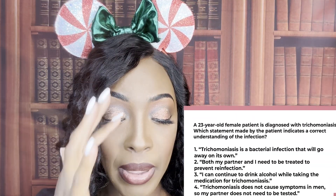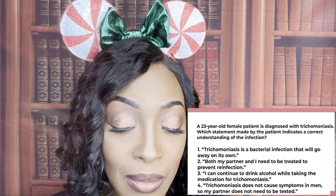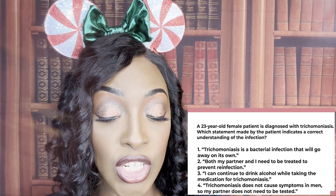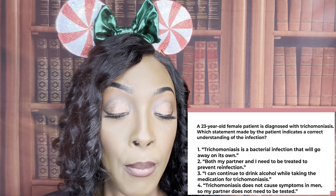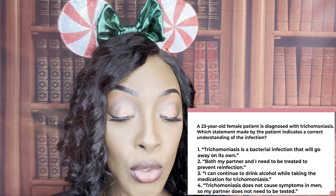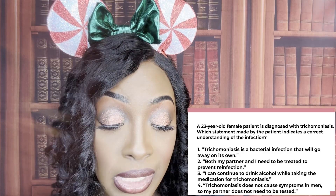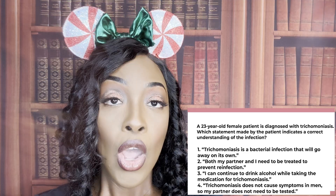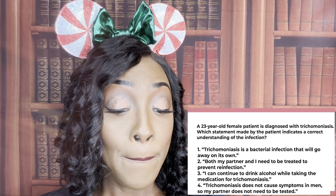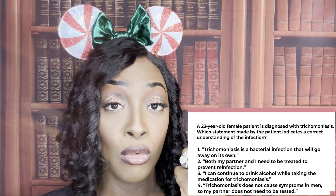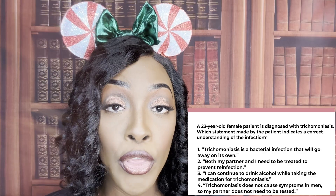A 23-year-old female patient is diagnosed with trichomoniasis. Which statement made by the patient indicates a correct understanding of the infection? One: trich is a bacterial infection that will go away on its own. Two: both my partner and I need to be treated to prevent reinfection. Three: I can continue to drink alcohol while taking this medication for trich. Or four: trich does not cause symptoms in men, so my partner does not need to be tested. The only answer showing correct understanding is two. All three STIs — gonorrhea, chlamydia, and trich — infection does not confer immunity. You see a common theme?